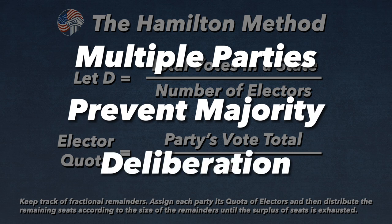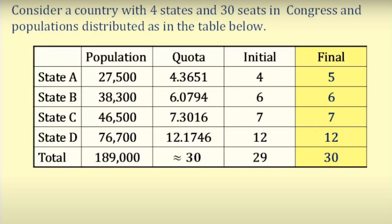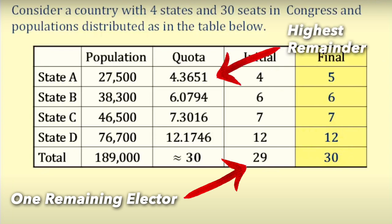The Hamilton method works like this: the total number of votes in a state is divided by the number of available electors, which equals d, or the number of votes needed per elector. Next, divide the total number of votes of each party by d, and this will equal the number of electors each party is awarded. There will be one or two remaining electors; whichever party or parties have the highest remaining votes will be awarded the final one or two electors. Let's use a real-world example — in 1992, Ross Perot made significant inroads into the presidential election as a third-party candidate.